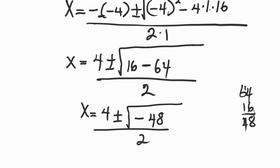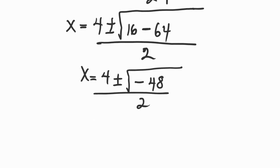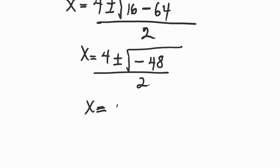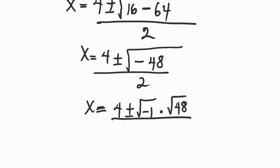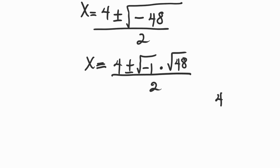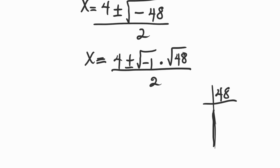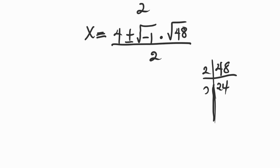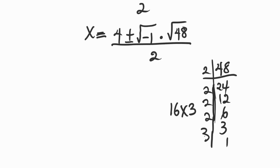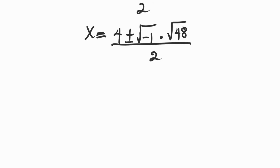So we have 4 plus or minus the square root of negative 48, divided by 2. This is the same as 4 plus or minus the square root of minus 1 times the square root of 48, divided by 2. Let's break down 48: 48 equals 2 times 24, 2 times 12, 2 times 6, 2 times 3 — giving us 2 times 2 times 2 times 2 times 3, which is 16 times 3. The square root of 16 is 4, so we represent 48 as 16 times 3.